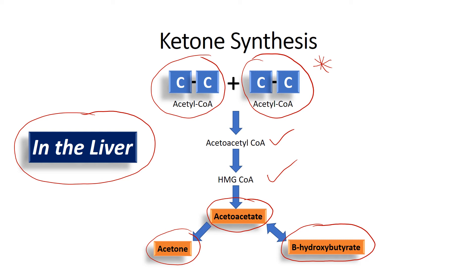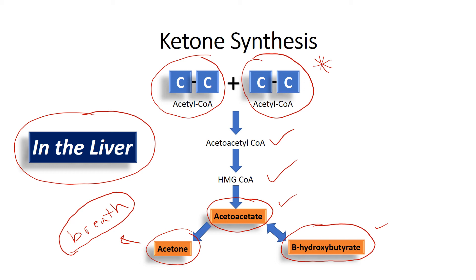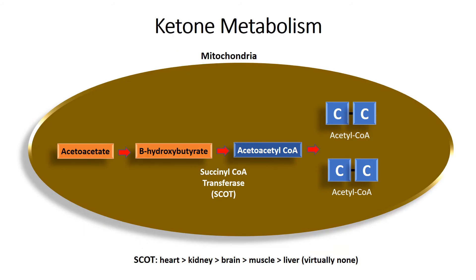Acetone is very volatile, so much of it is evaporated in the breath. That's why there are now technologies to estimate blood ketones by measuring breath acetone. Breath acetone levels are proportional to the production of the other ketones — acetoacetate and beta-hydroxybutyrate — which is why you can measure ketones in the breath. All of this is happening in the liver due to a shortage of glucose because we're on a ketogenic diet with very low carbohydrate intake.